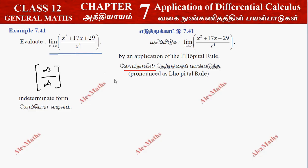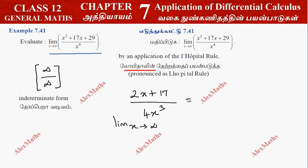If we get x to infinity, the denominator is infinity and the denominator is infinity. So this is an indeterminate form. Applying L'Hôpital's Rule.